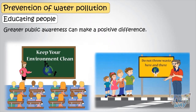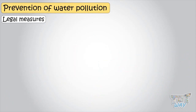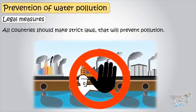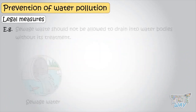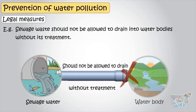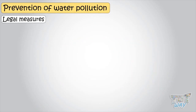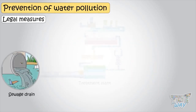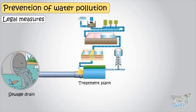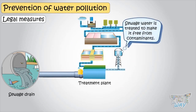Making laws to prevent water pollution is important. All countries should make strict laws that will prevent pollution. For example, sewage waste should not be allowed to drain into water bodies without treatment. All sewage drains should first lead to treatment plants, where sewage water is treated to make it free from contaminants before being discharged into any water body.